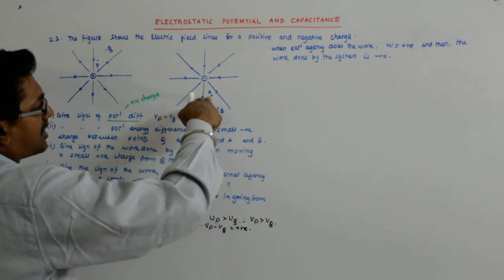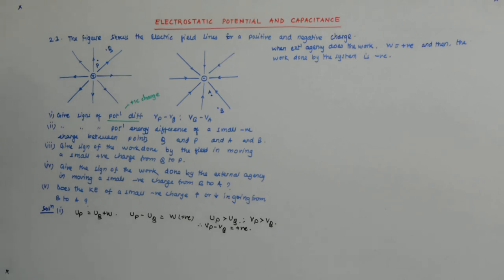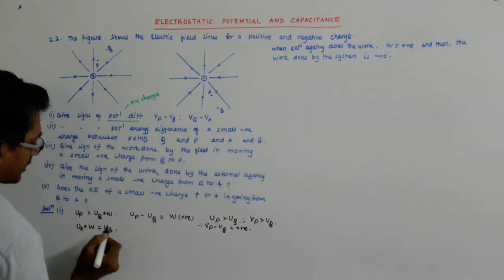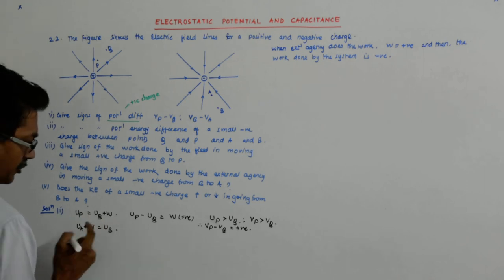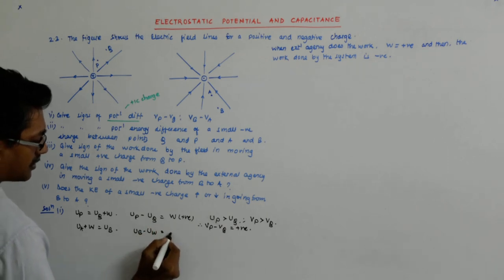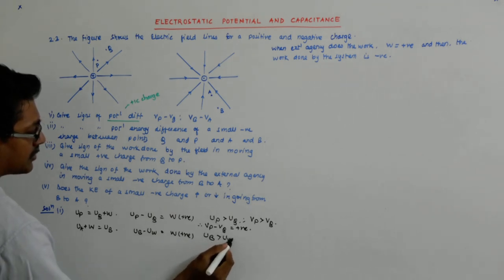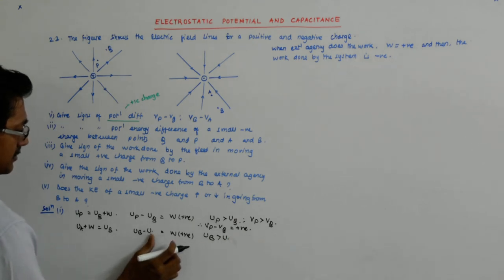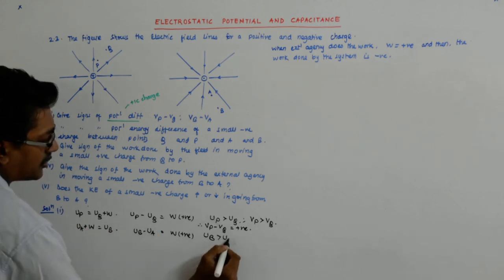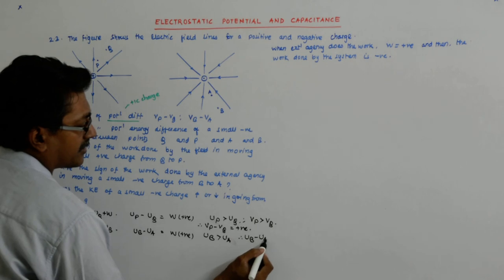If there is a negative charge here, it has the tendency to attract the unit positive charge. If I work in the opposite direction, I am inputting the work. So UA plus W equals UB, where W is positive. Therefore UB minus UA is positive, meaning UB is greater than UA. So VB minus VA is also positive.